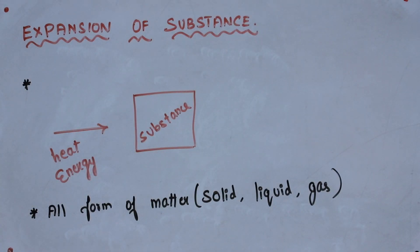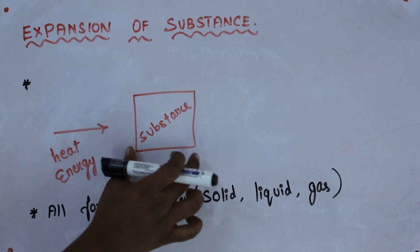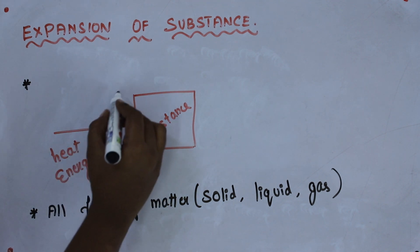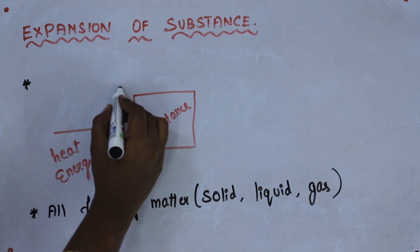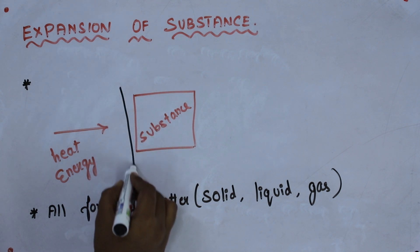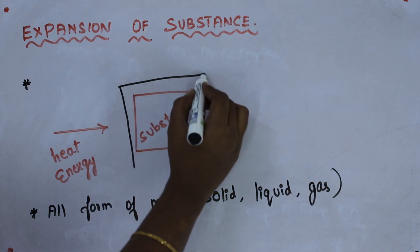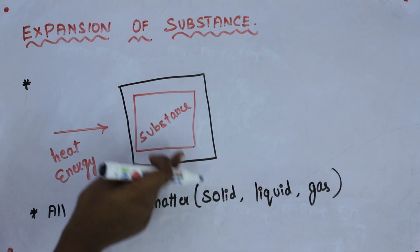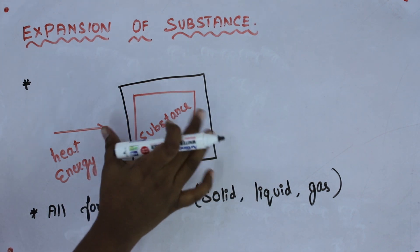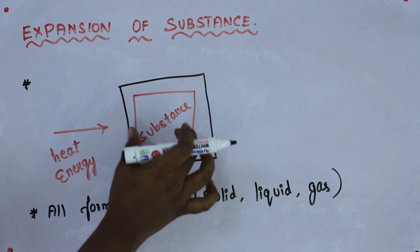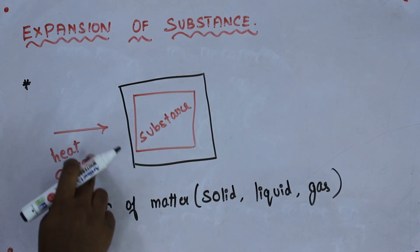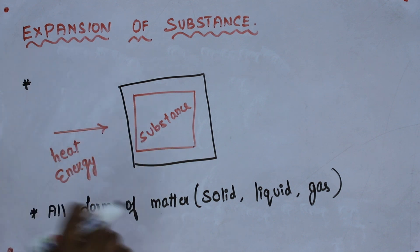Expansion of substance. Consider any substance — if we give heat energy to the substance, what will happen? There will be a change in the dimension of the body. The dimension of the substance will change because of the heat energy that we are applying to the substance.